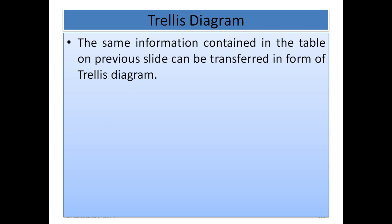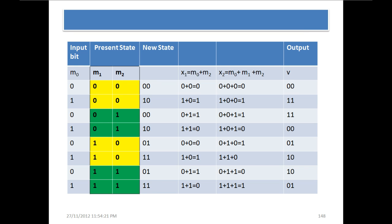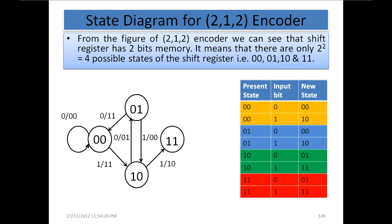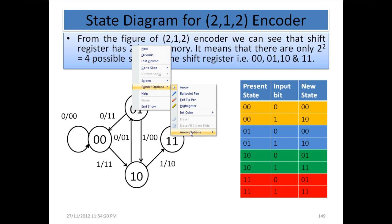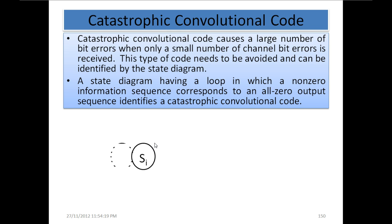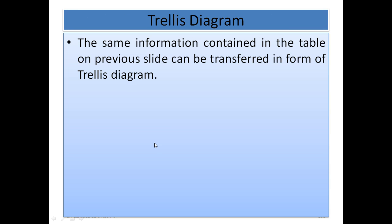The same information contained in the table on the previous slide can be transferred in the form of a trellis diagram. This information which is in tabular form, which we have converted previously into a state diagram, can be depicted as a state diagram. Now this state diagram is for the convenient depiction of that tabular information only. There is another way of showing this information graphically, and that is called a trellis diagram.